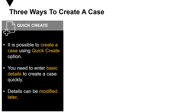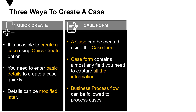There are three ways to create a case in Dynamics 365. The first one is called quick create, where a quick create form opens up and you can create a case using that option. All you need to do is enter basic details to create a case quickly, and later on you can edit and modify the details as per the requirement. The second one is by using the case form, which contains almost any field you need to capture all the information, and you can also use the business process flow that is relevant to your company.